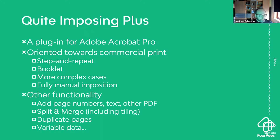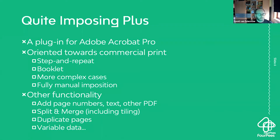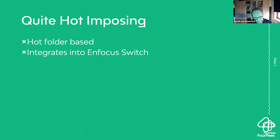You can see a list of features — I'll try to show some of these, like adding page numbers and text. You can also do split and merge, duplication of pages, and there are even variable data possibilities. It goes from very basic to much more advanced. Quite Hot Imposing is essentially the same but allows hot-folder-based processing and integrates into Switch.